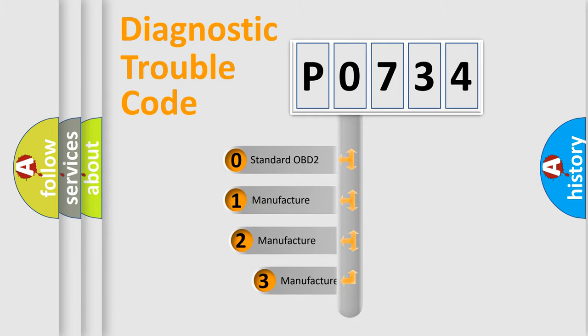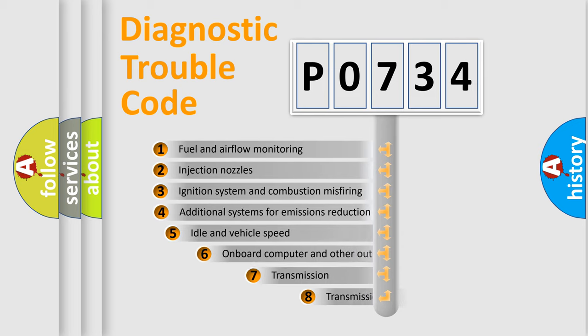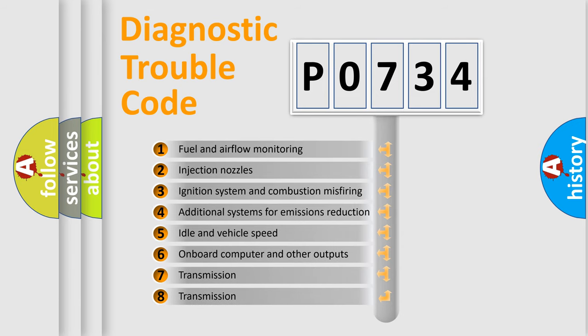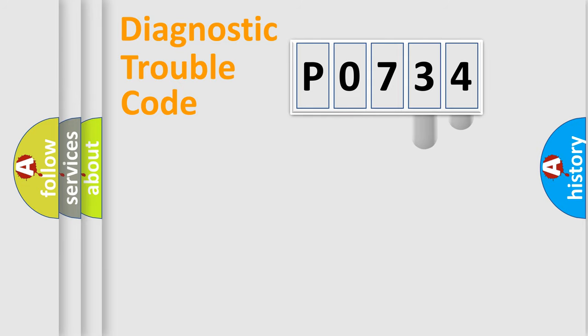If the second character is expressed as zero, it is a standardized error. In the case of numbers 1, 2, 3, it is a more prestigious expression of the car-specific error. The third character specifies a subset of errors.